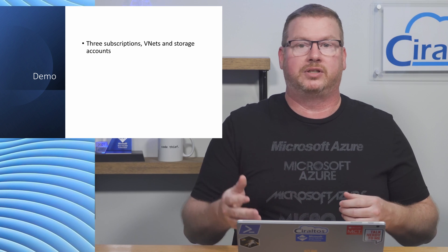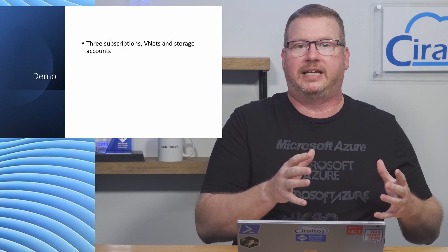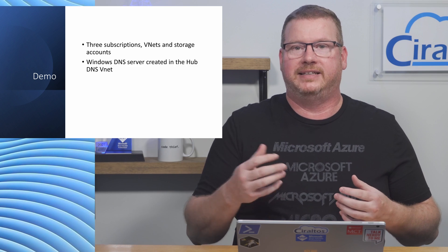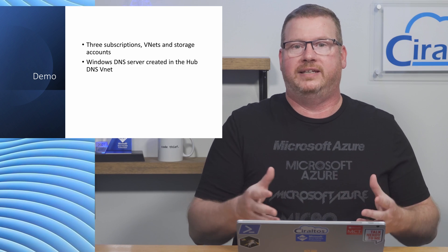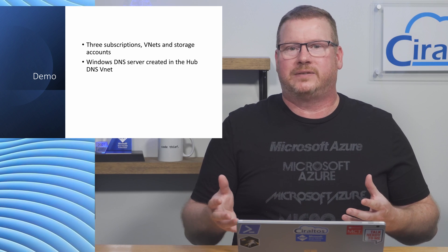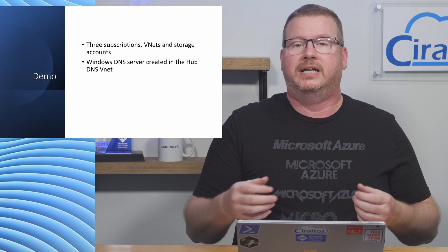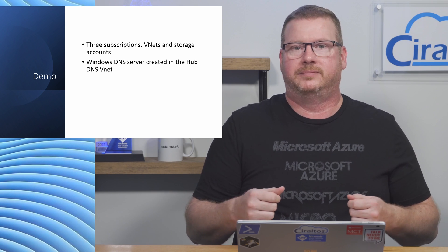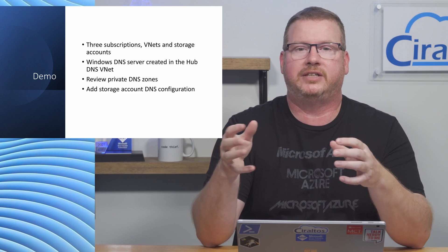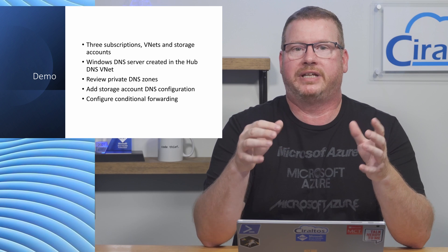A few things to know about the demo coming up: we use three subscriptions and VNets with a storage account attached to each. The first two storage accounts are configured; we'll walk through setting up the third one in this video. A Windows Server is in place on the DNS hub VNet with DNS services installed — this is a forwarder server. I used a Windows DNS server for this example, but you could use any DNS server as your forwarder, such as Linux with BIND.